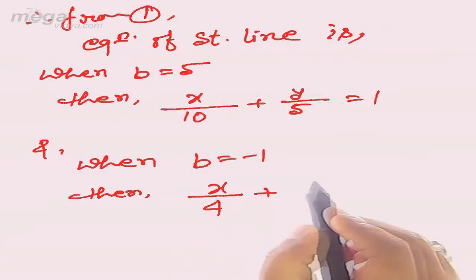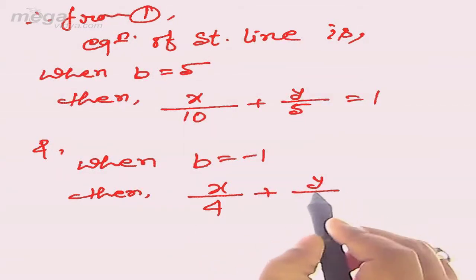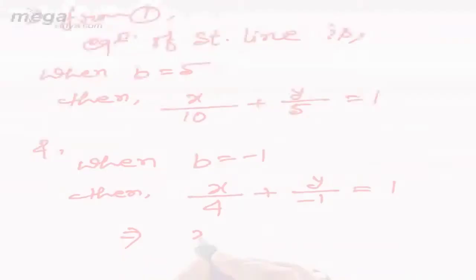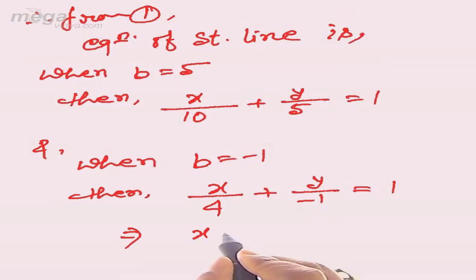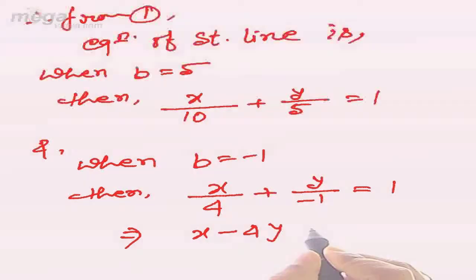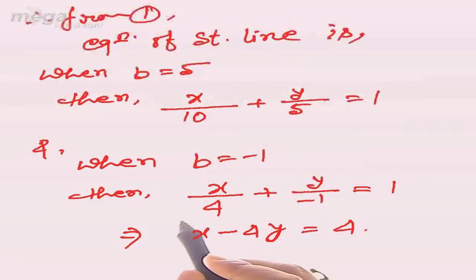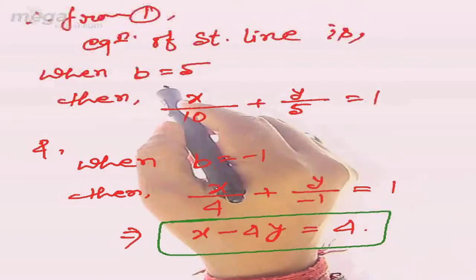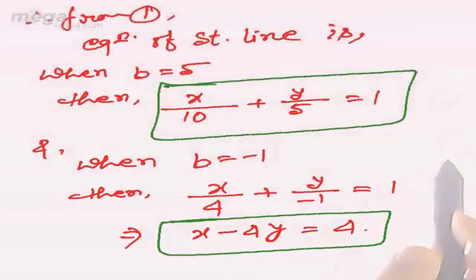So x/4 - y = 1 gives x - 4y = 4. We get two equations: one is x - 4y = 4, and the other from x/10 + y/5 = 1 can be simplified to x + 2y = 10.